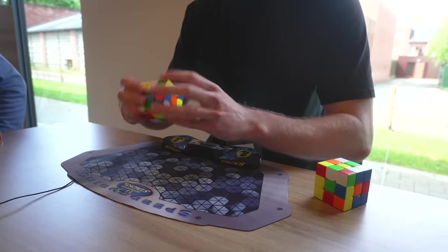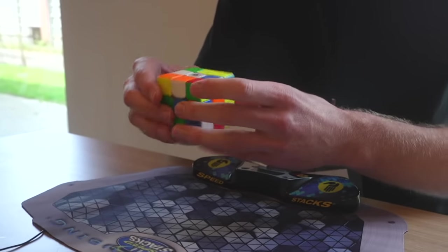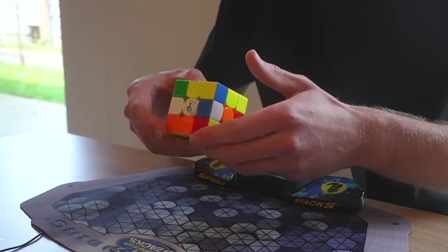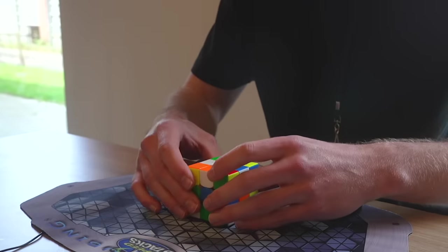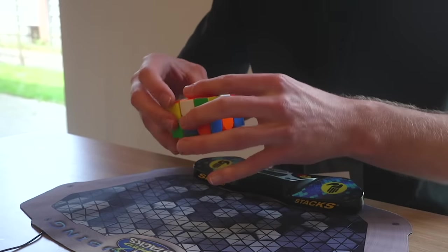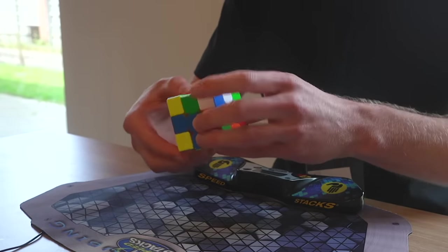The first round of 3x3 was at 11 in the morning which meant that I didn't really have time to warm up. As you can see right here I went for a yellow cross and I think it was a pretty easy cross but for some reason I messed up the second pair.